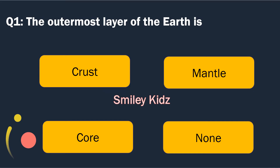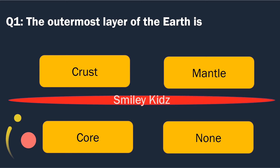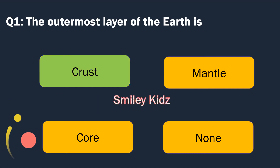Question number 1. The outermost layer of the Earth is. Options are: Crust, Mantle, Core and Moon. The right answer is Crust. The outermost layer of the Earth is Crust.